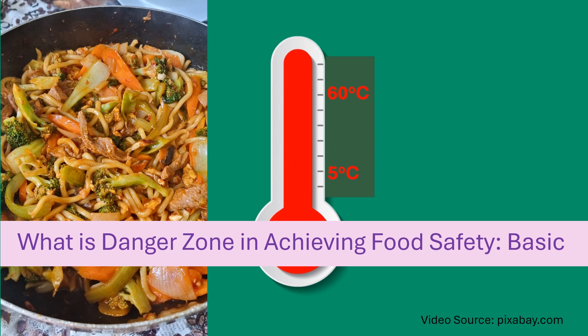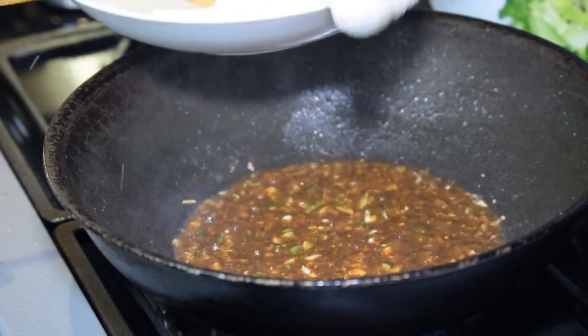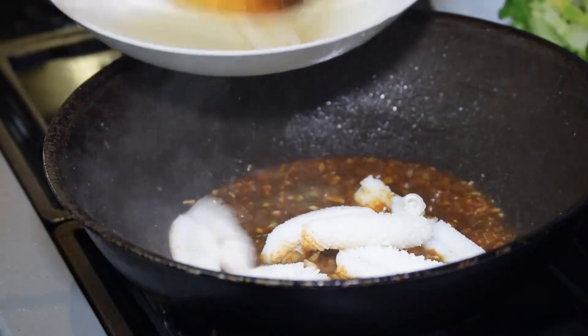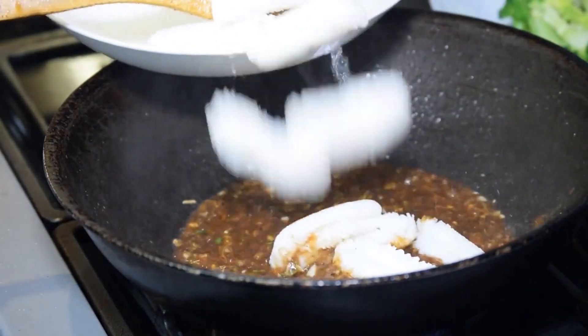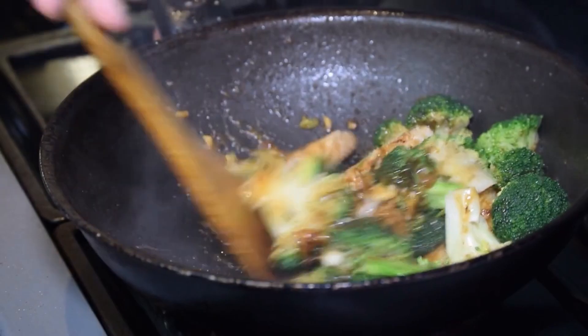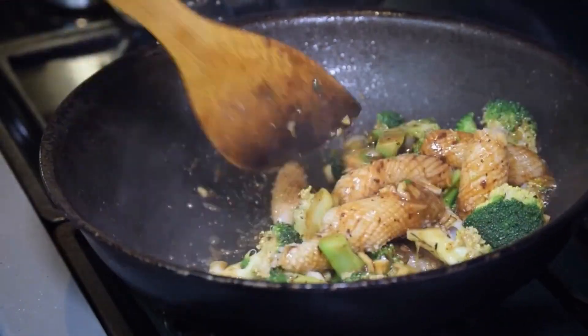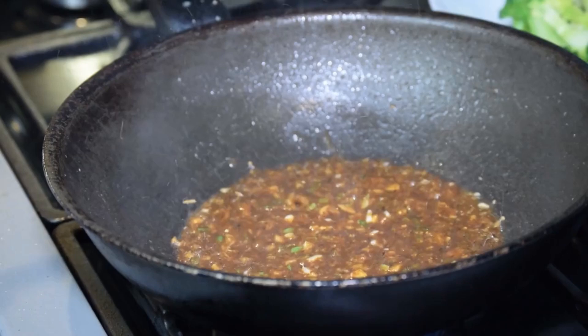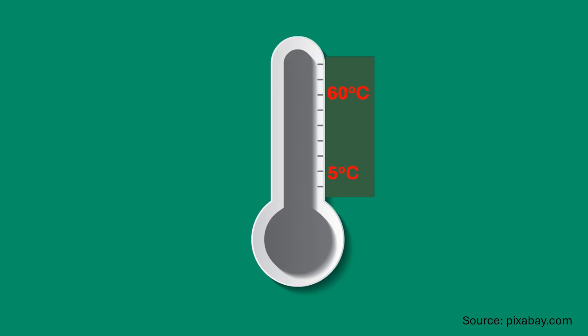In the next video, I will explain how to manage the danger zone in securing food safety. Consider an example of cooked served or cooked chilled food. In order to achieve food safety, we need to know how to handle these foods in relation to temperature exposure. In this case, we must know the danger zone. These foods are common in our kitchen, restaurant, and catering services. Danger zone is the temperature where microbes grow at a very high rate.